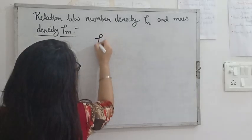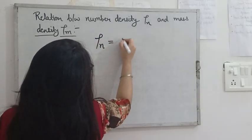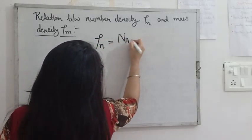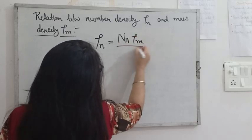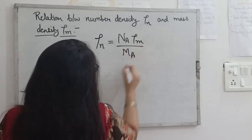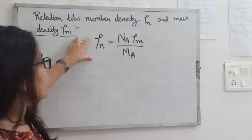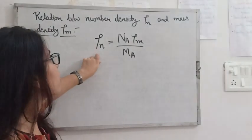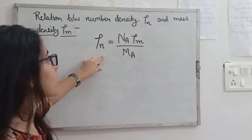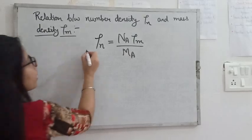The relation is ρₙ equals Nₐ ρₘ upon Mₐ. Now what do these symbols mean? So ρₙ is the number density or we can say it will be equal to the atomic density.